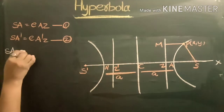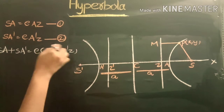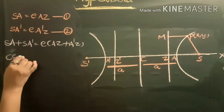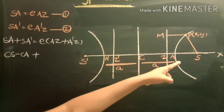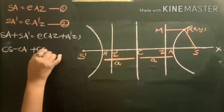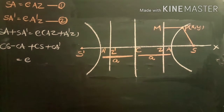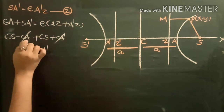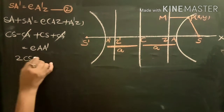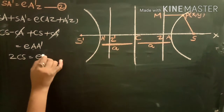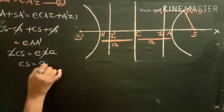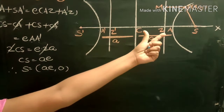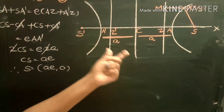Adding equations 1 and 2: SA plus SA dash equals e times (AZ plus A dash Z). From the diagram, SA equals CS minus CA and SA dash equals CS plus CA dash. Since CA and CA dash are equal they cancel, giving 2CS equals e times 2a. Therefore CS equals ae, and the focus S is at the point (ae, 0) on the x-axis.